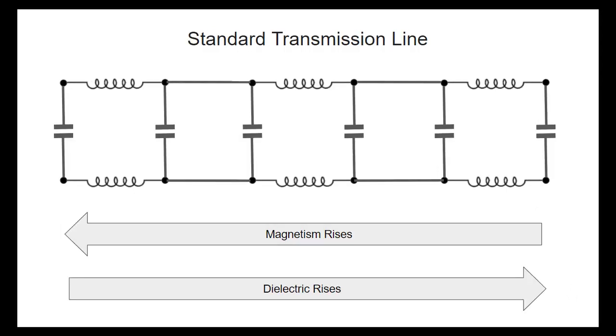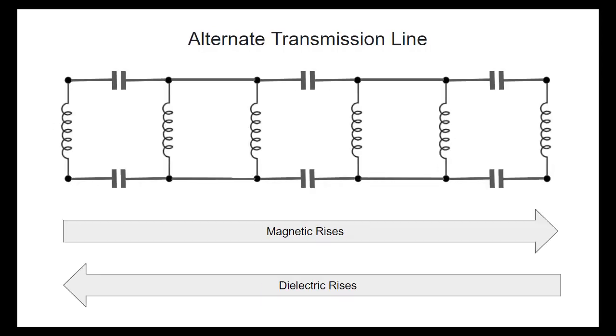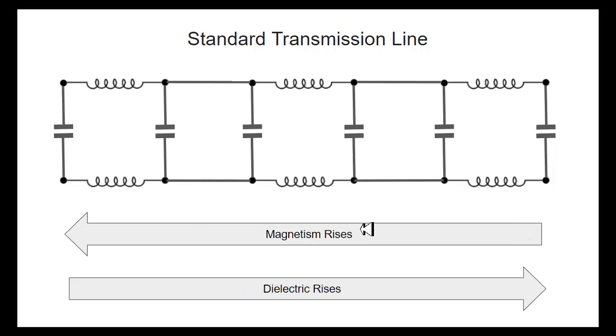In the standard transmission line, it's the opposite. The magnetic strength is stronger at the beginning of the line and weaker at the end of the line. And the dielectric strength is stronger at this end and weaker at this end.